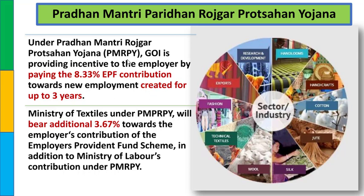मतलब Ministry of Labor तो 8.33% दे ही रही है. जो बाकी के 12% में से बचे हुए होंगे, वो सब Ministry of Textile contribute कर देगी. कुल मिलाकर employer का पूरा EPFO contribution cover हो जाता है.